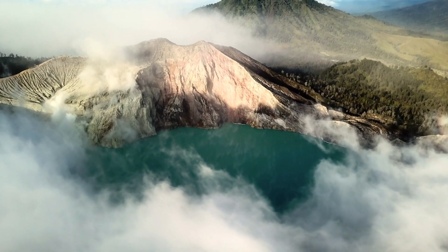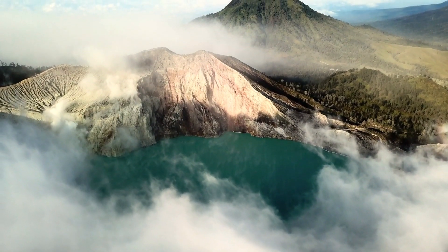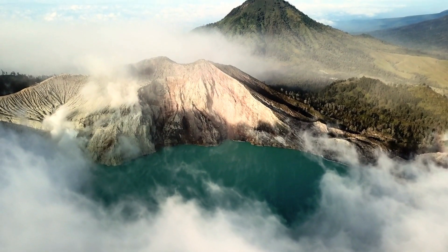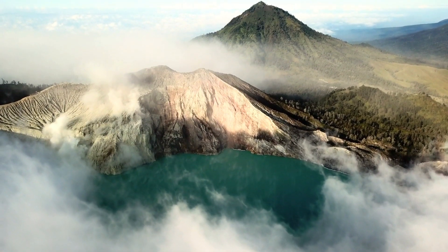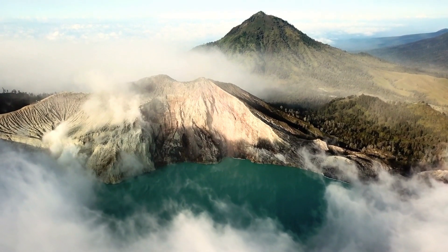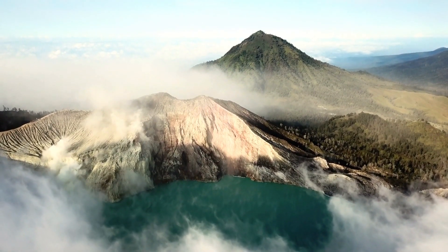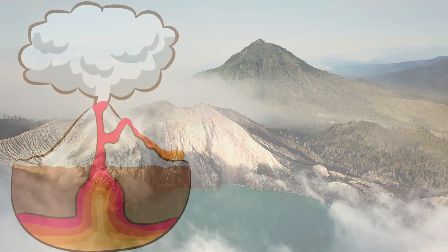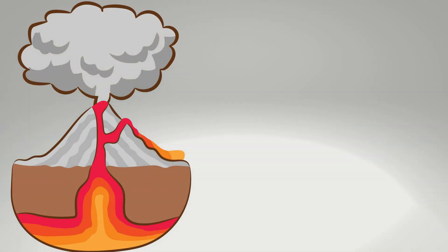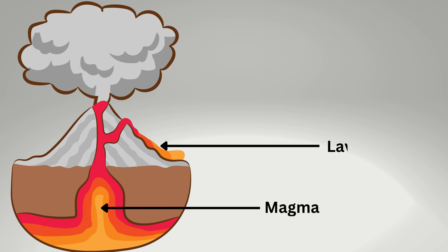A volcano is an opening in the Earth's crust through which molten rock, hot gases, and other materials erupt. The molten rock is called magma when it is underground and lava when it reaches the surface.